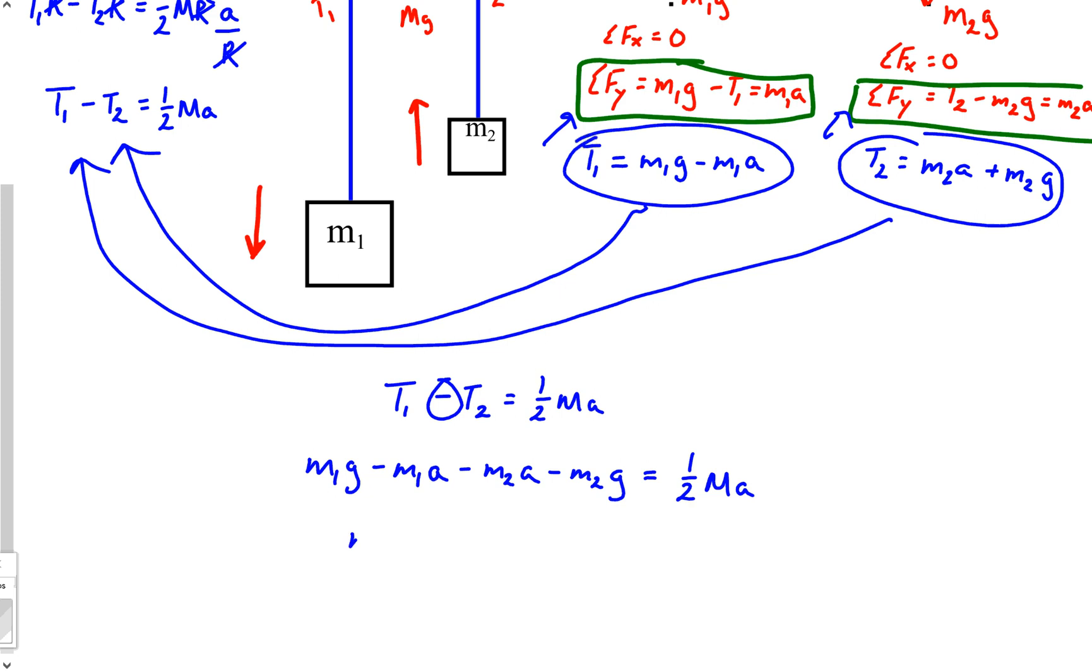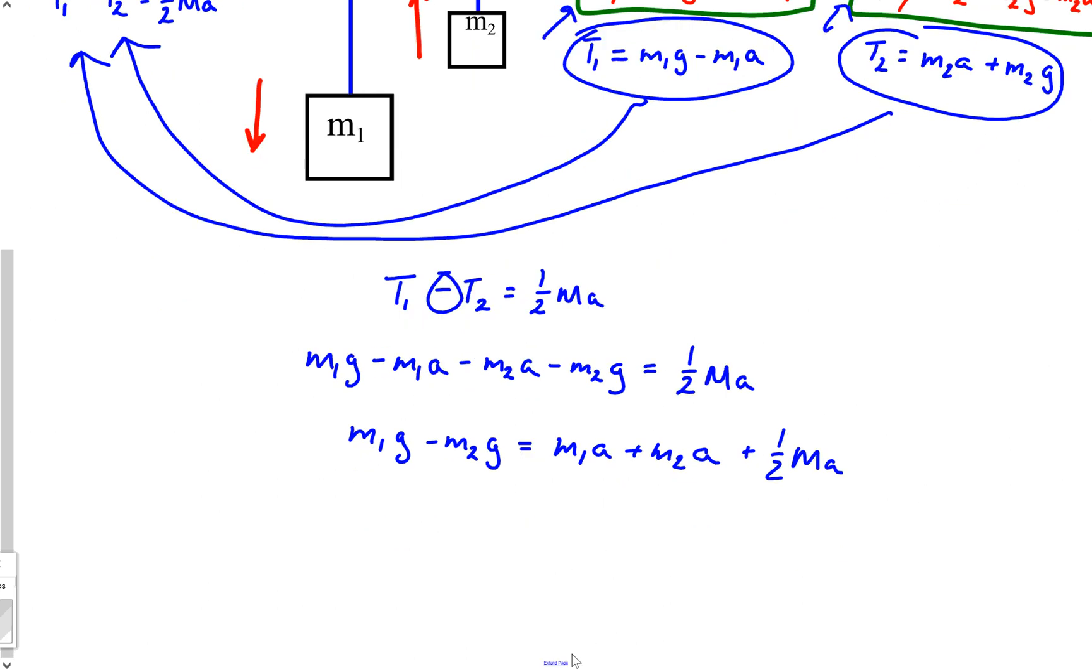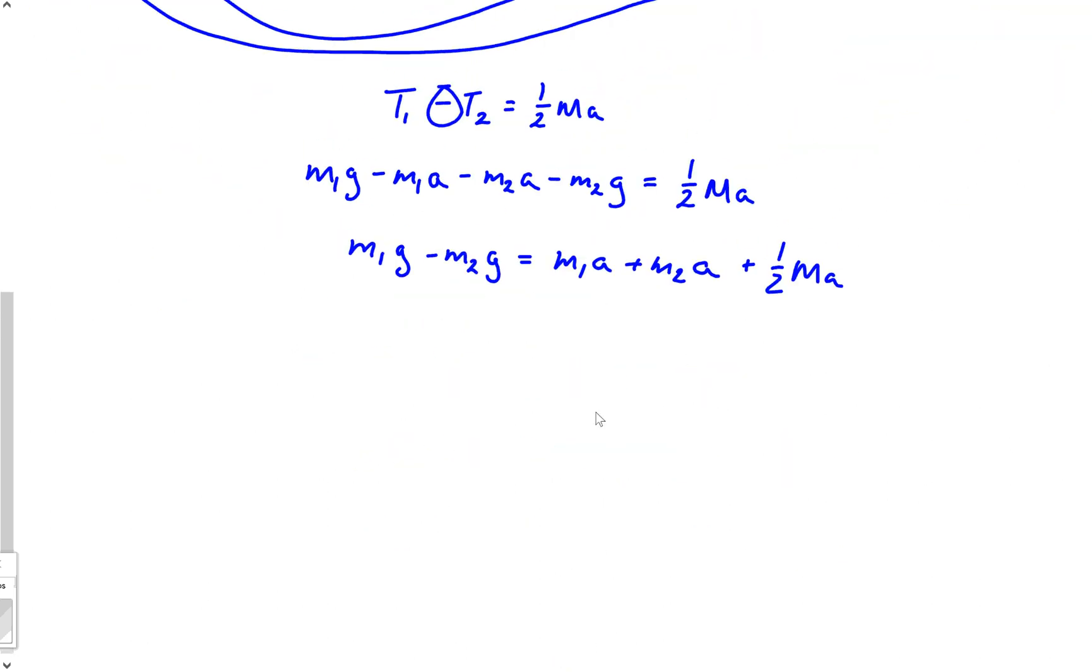Let's get everything with a on one side, the g is on the other. So let's kind of separate this. m1g minus m2g equals the other side we'd have what? m1a plus m2a plus one half Ma. You really should not need to finish this video, but if you feel compelled I will go ahead and solve it for a. I'm going to factor the g out of the left side, m1 minus m2. I'm going to go ahead and divide, so we'd end up dividing by m1 plus m2 plus one half M equals a.